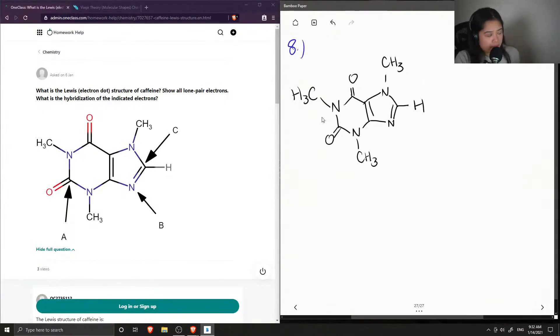Okay, so I just drew what was given in the question, and basically we just need to show all the lone pairs. So basically all of the nitrogens will have a single lone pair just to complete their octet, and finally both of the double bonded oxygens will contain two lone pairs.